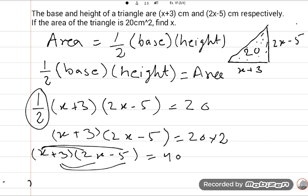Now I multiply this with this and this with this. 2x square minus 5x plus 6x minus 15 is equal to 40.